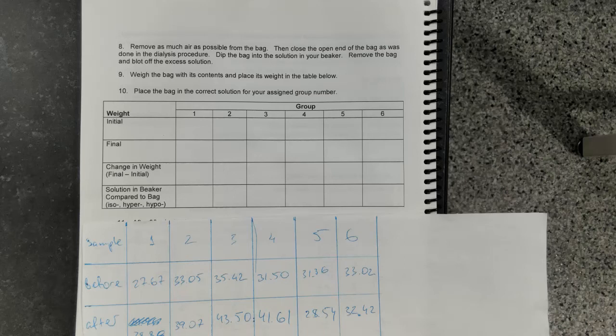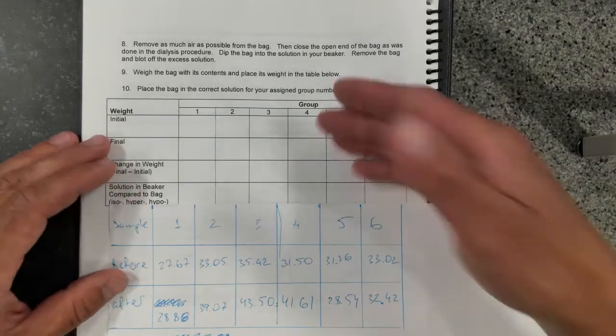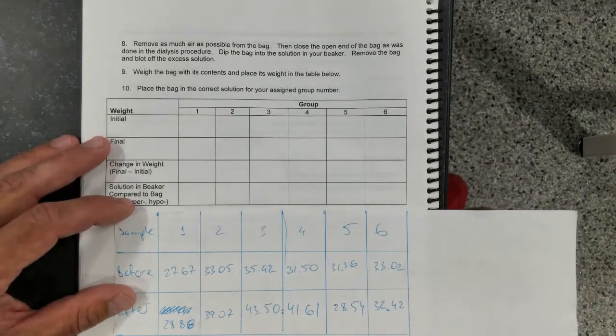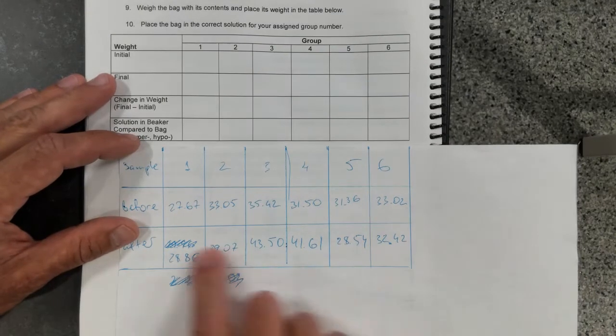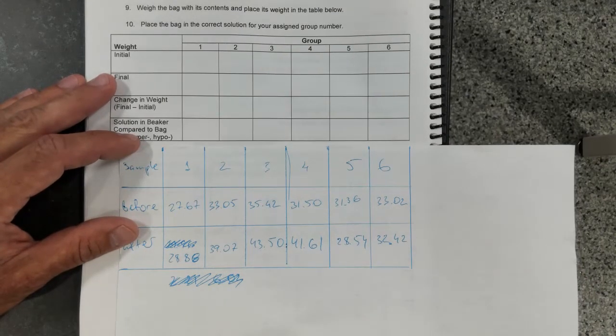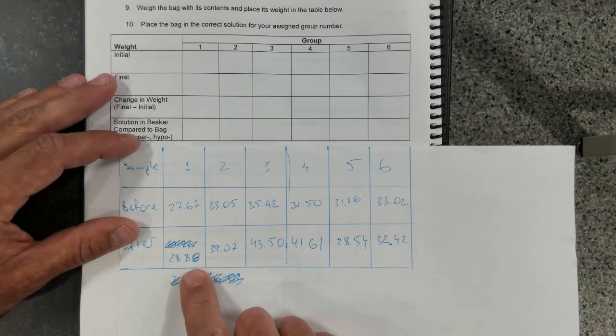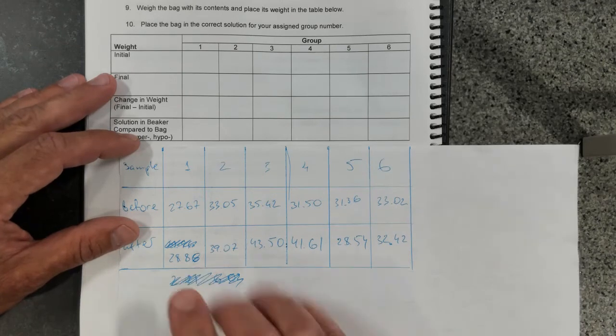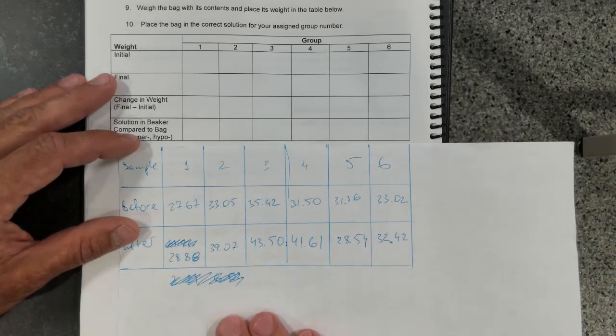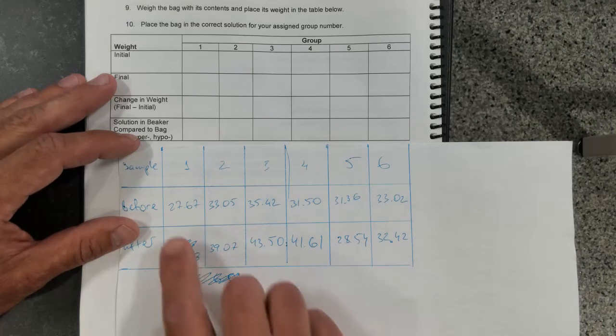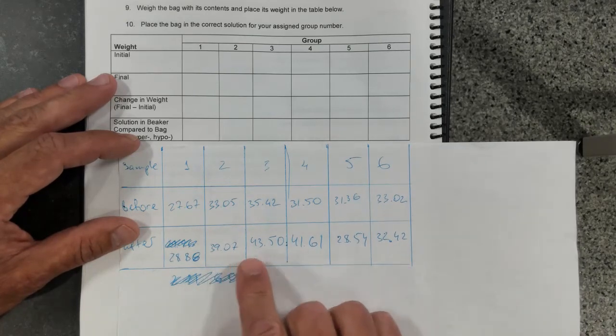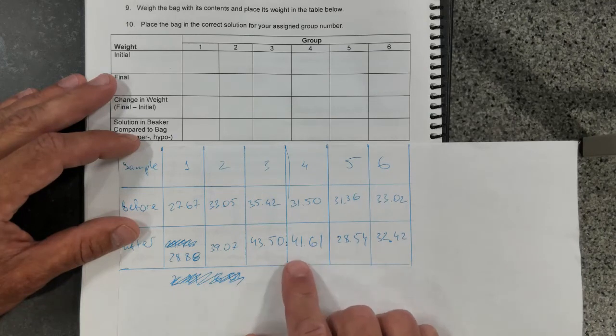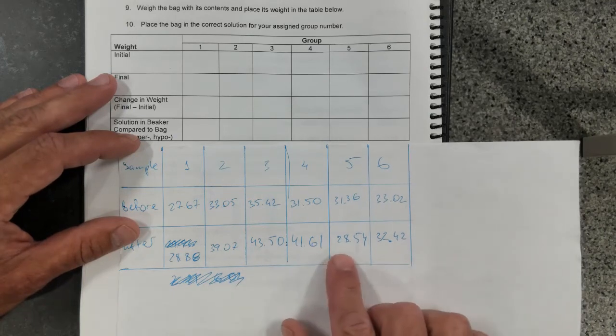Okay, so here's the table that you need to fill out. This is my table, so you have data: it's 28.88. All other numbers I believe are very discernible, so 27, 28.88, 39.07, 43.50, 41.61, 28.